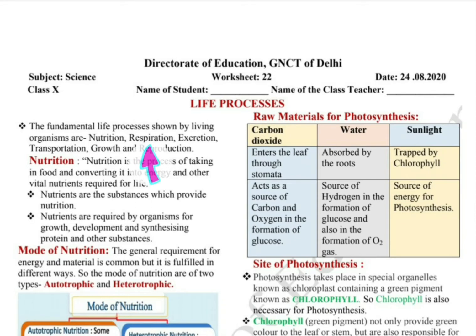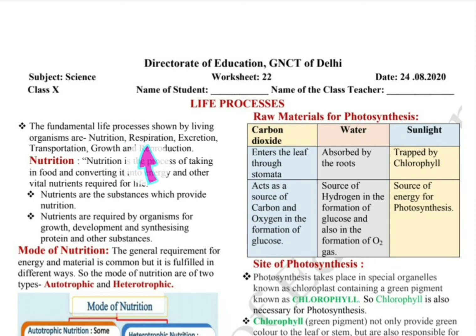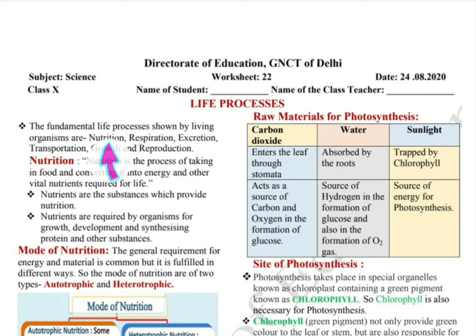Then in respiration, mainly exchange of gases and obtaining energy from food — we burn in oxygen through a step-wise reaction and mainly produce ATP. Next is excretion — the process of removal of waste from our body. And then transportation: in our body, we transport oxygen, carbon dioxide, nutrients, and waste material from one place to another. Then growth and reproduction.